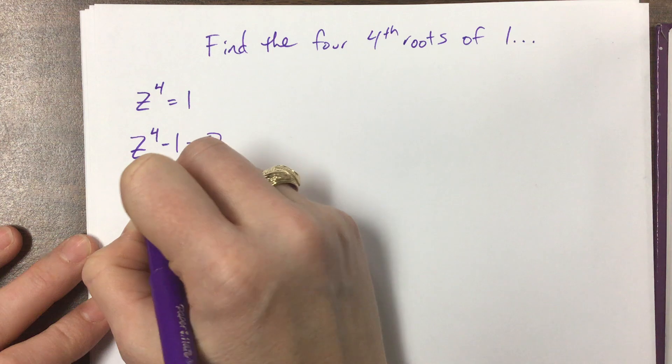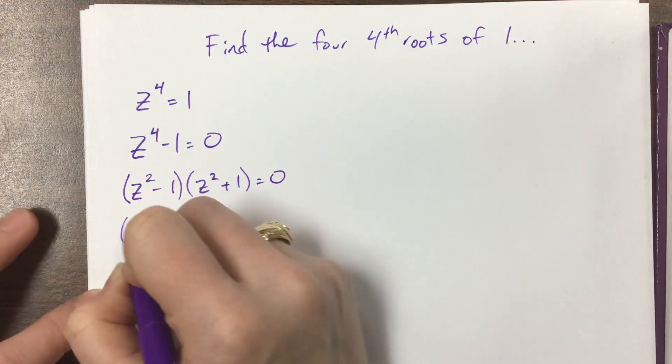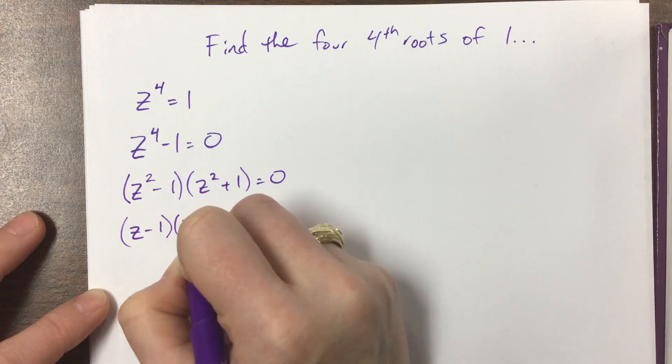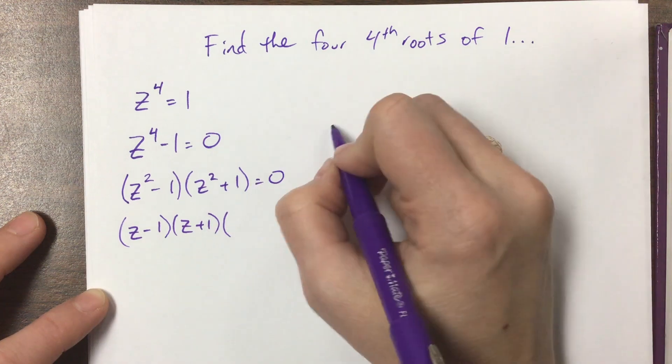z squared minus 1 times z squared plus 1. Well, this can factor down z minus 1 times z plus 1 times this right here. Think about this for a second.